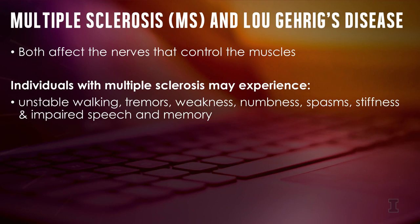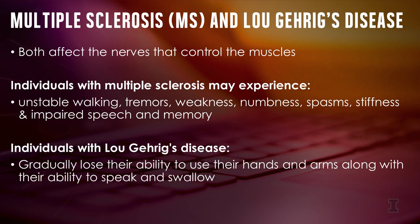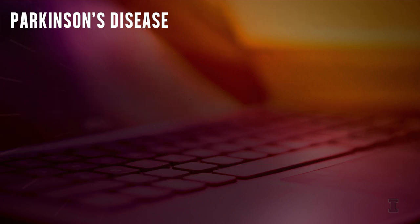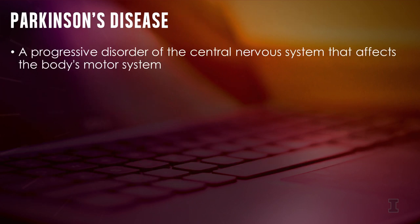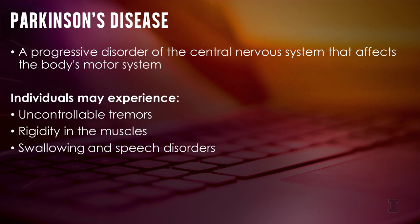Individuals with MS may experience functional limitations like unstable walking, tremors, weakness or numbness, spasms, stiffness, and impaired speech and memory, while those with Lou Gehrig's disease gradually lose their ability to use their hands and arms, along with their ability to speak and swallow. Parkinson's disease is a progressive disorder of the central nervous system that affects the body's motor system. Depending on how advanced the disease is, individuals with Parkinson's may have uncontrollable tremors and rigidity in the muscles, and sometimes swallowing and speech disorders.